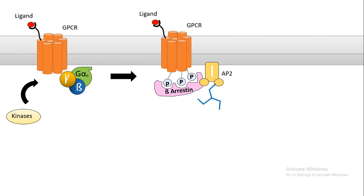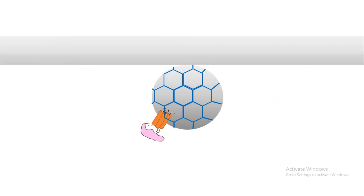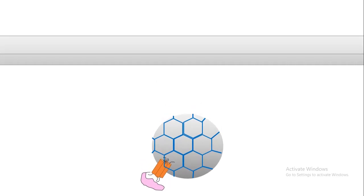Once clathrin coat is assembled, the GPCR is endocytosed. The GPCR endocytosis in a clathrin-dependent manner is one of the important ways by which receptor desensitization could occur.